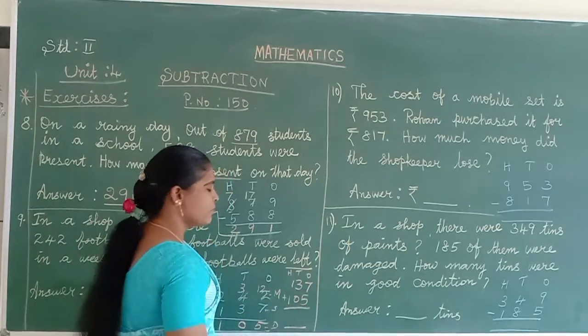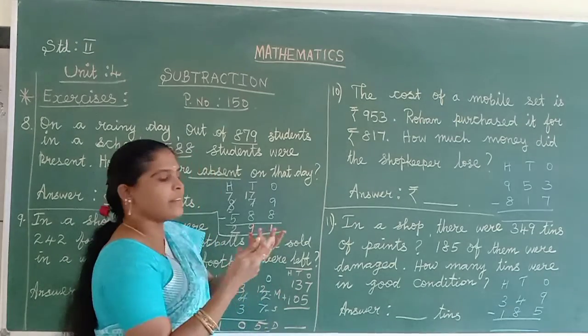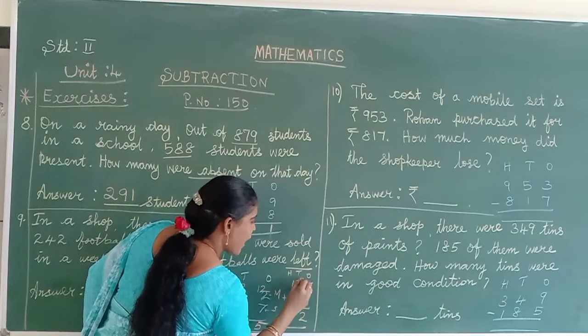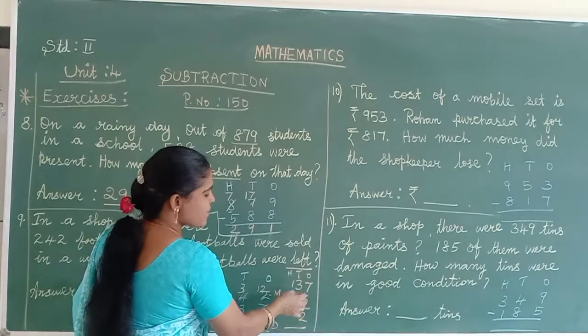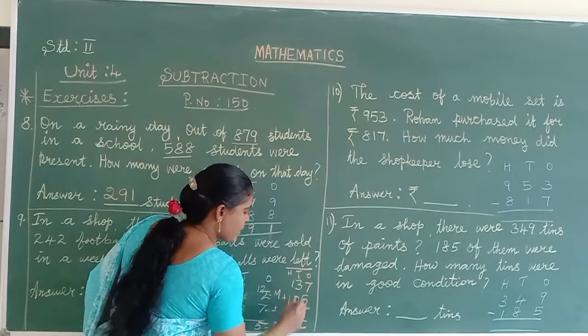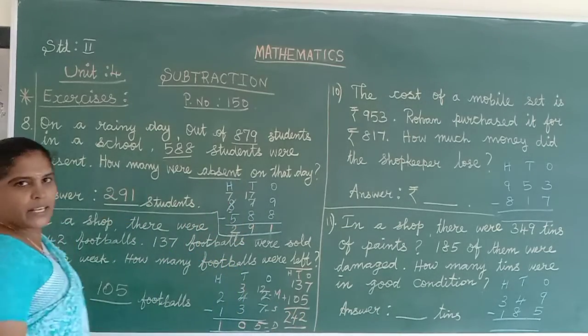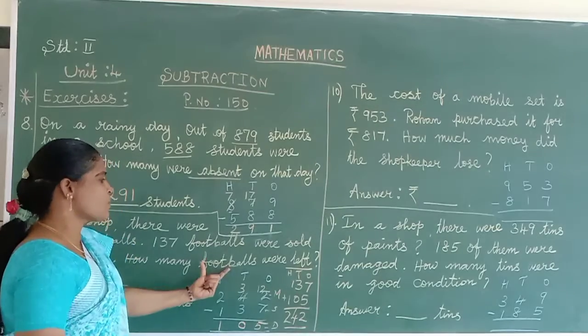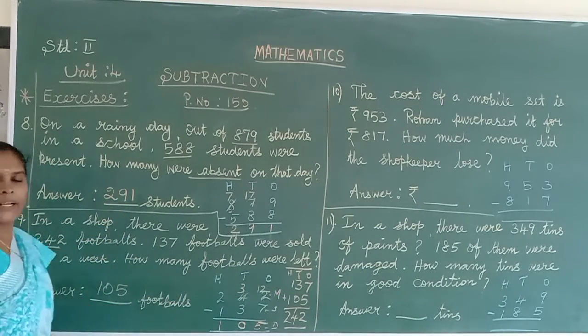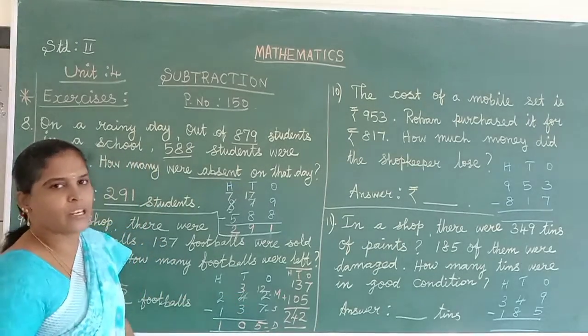7 plus 5. 7 in the mind, 5 on your finger. After 7: 8, 9, 10, 11, 12. So we can write 2 and 1 carry over. 0 has no value, so 3 plus 1 equals 4. 1 plus 1 equals 2. So the total number we get is 242. Our answer is correct. The rest of the footballs left in the shop is 105. Verification also will be done if we want.